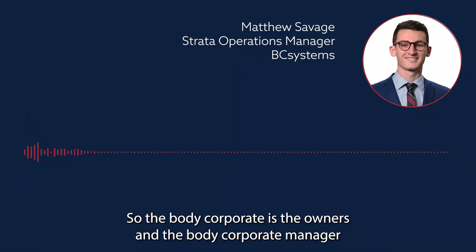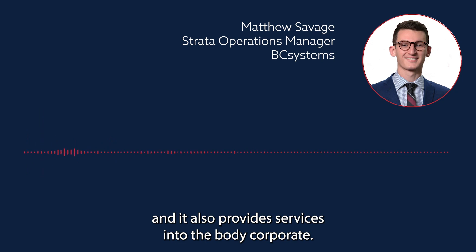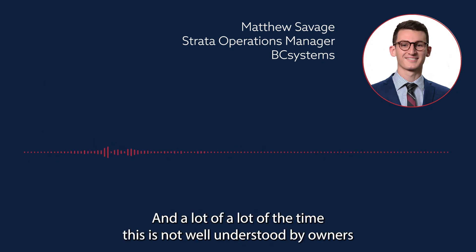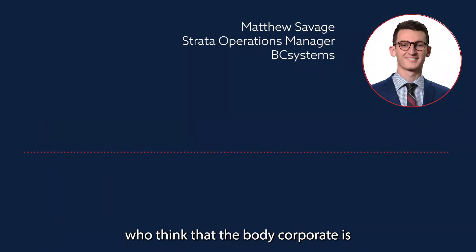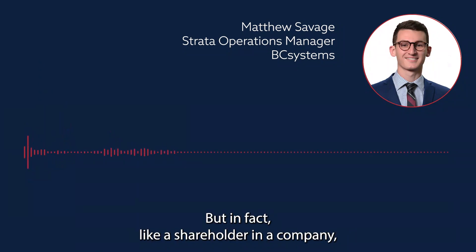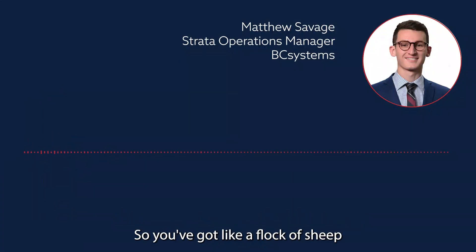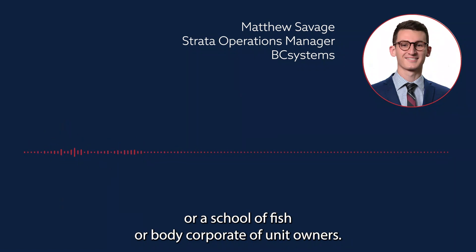So the body corporate is the owners, and the body corporate manager just provides administrative services, and the on-site manager is a contractor that also provides services into the body corporate. A lot of the time this is not well understood by owners, who think that the body corporate is an entity they're not part of and need to interface with. But in fact, like a shareholder in a company, the company relates to all of the owners together — like a flock of sheep or a school of fish, or a body corporate of unit owners.